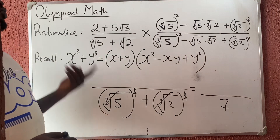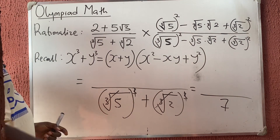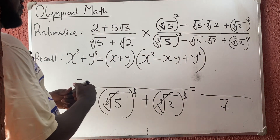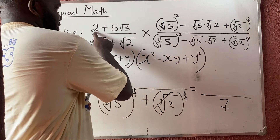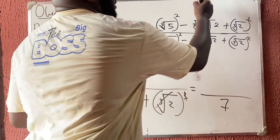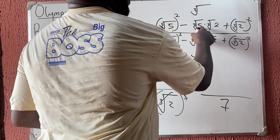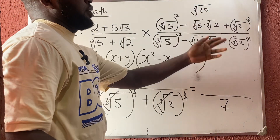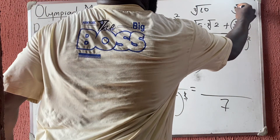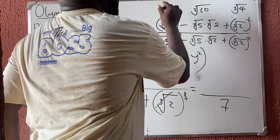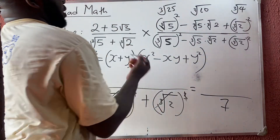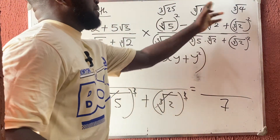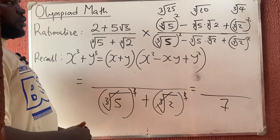The denominator is 7. For the numerator, compute each term when you multiply through. The cube root of 5 times the cube root of 2 gives you the cube root of 10. The cube root of 2 squared gives the cube root of 4, and the cube root of 5 squared gives the cube root of 25. My board is too small, so go ahead and multiply everything out — it is not difficult.